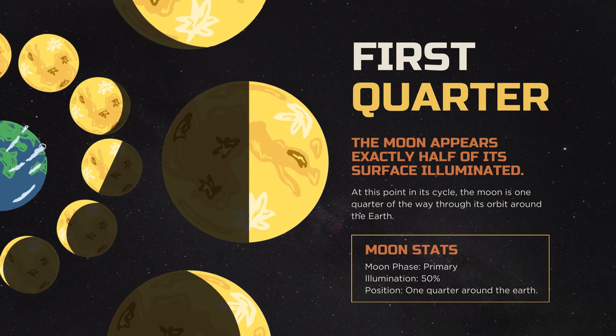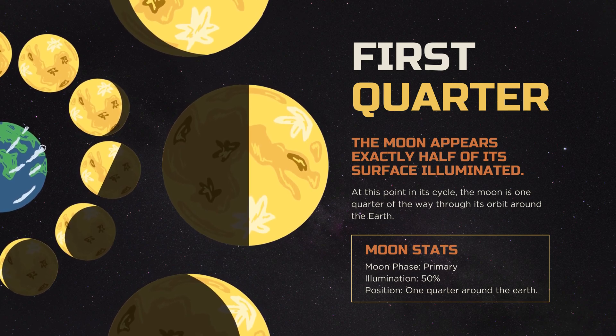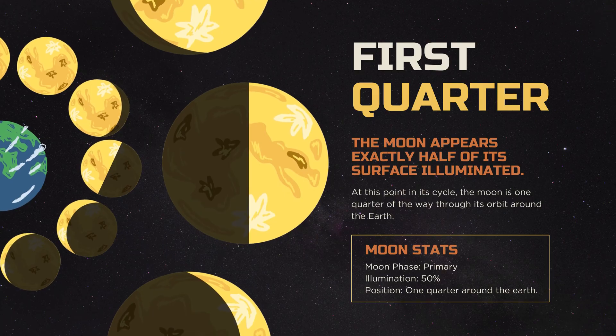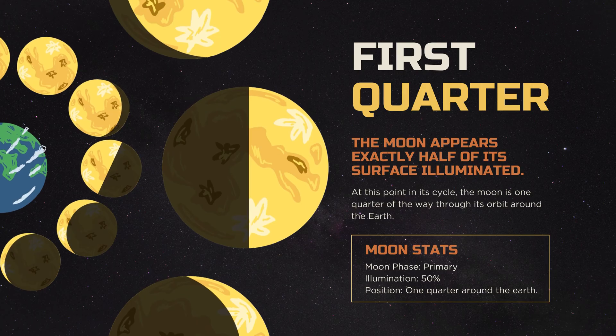We then reach the first quarter, where the Moon appears exactly half-illuminated. At this stage, the Moon is a quarter of the way through its orbit around the Earth. It occurs approximately one week after the New Moon.